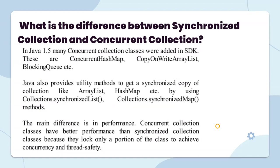What is the difference between synchronized collection and concurrent collection? In Java 1.5, many concurrent collections were added to the SDK, such as ConcurrentHashMap, CopyOnWriteArrayList, and BlockingQueue. Java also provides utility methods like Collections.synchronizedList and Collections.synchronizedMap to get a synchronized copy of a collection. The main difference is in performance — concurrent collection classes have better performance than synchronized collections because they lock only a portion of the data to achieve concurrency.